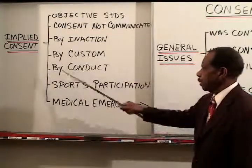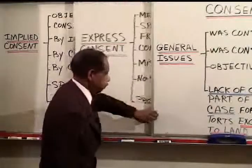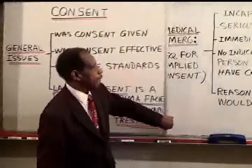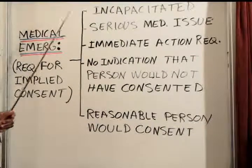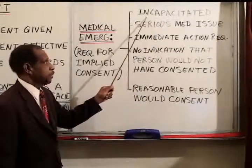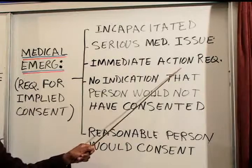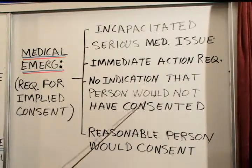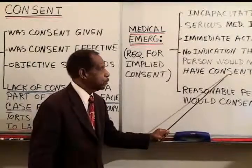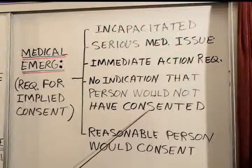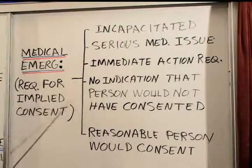Finally, for medical emergency — when is there implied consent? In the case of medical emergencies, here are the requirements for implied consent. First, the person needs to be incapacitated. There needs to be a serious medical issue requiring immediate action. There must be no indication that the person would not have consented — for example, if the person is wearing a bracelet showing a certain religious objection to the procedure. And a reasonable person would consent. These are the requirements for implied consent when there is a medical emergency.